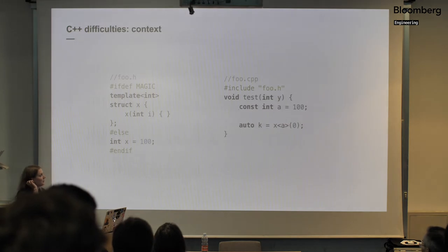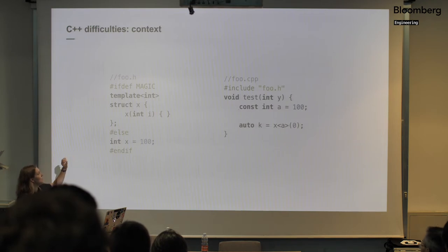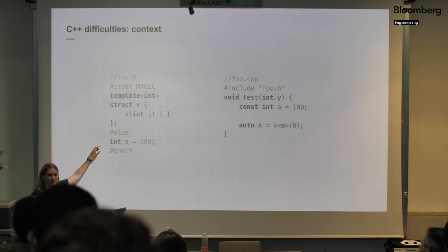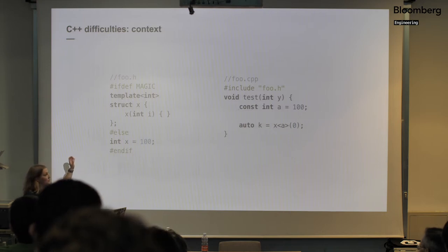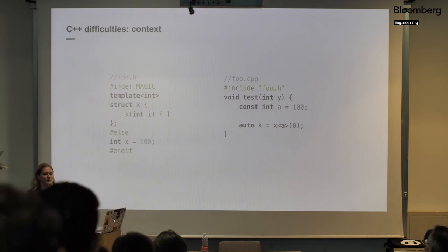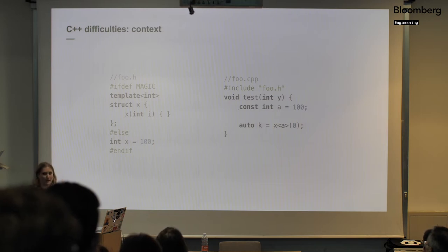Another difficulty is context, because macros hide the actual context. In this sample I have a magic variable and an ifdef that defines X as either an integer or a template depending on the magic value. That magic value affects the code on the right — the type of variable K depends on the magic. This is what I call breaking the context.